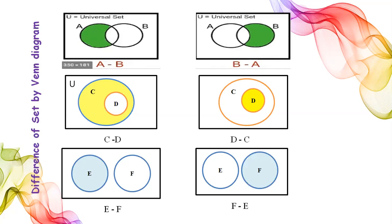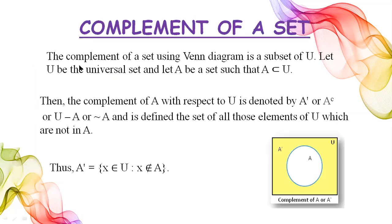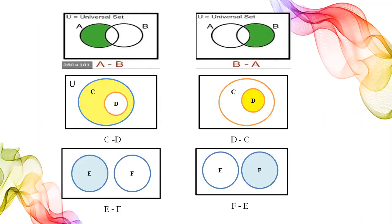This is a summary with more examples of the difference of sets using Venn diagrams. This diagram shows A minus B, and this diagram shows B minus A. Both diagrams are the same in structure — the only difference is the shaded area. If A is shaded, it means this is A minus B; if B is shaded, it is B minus A.